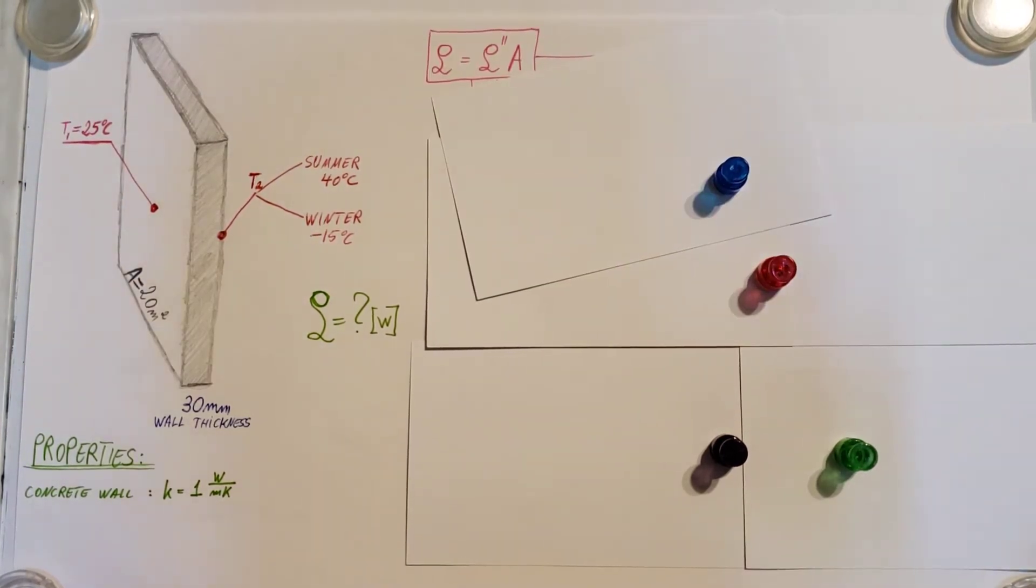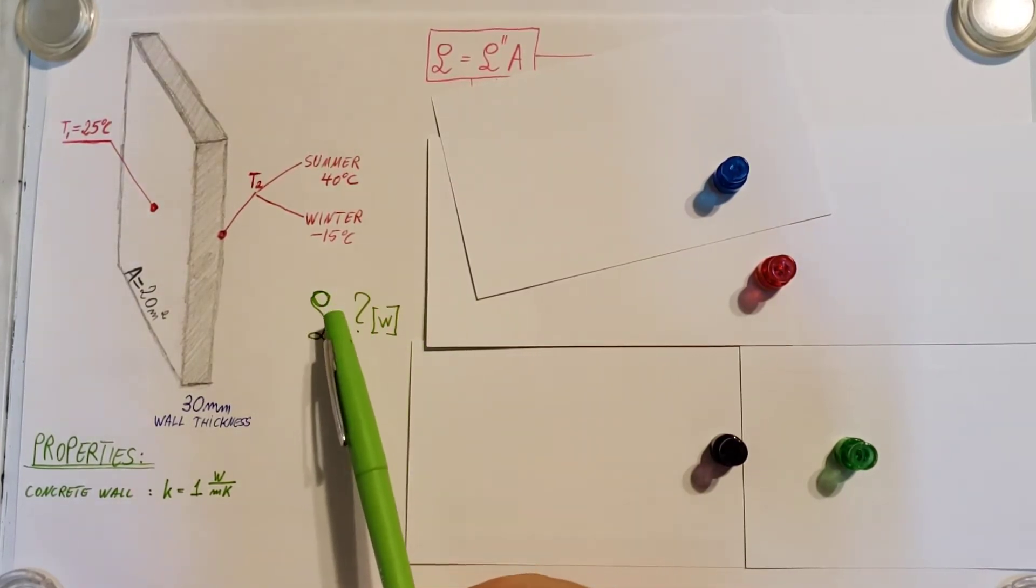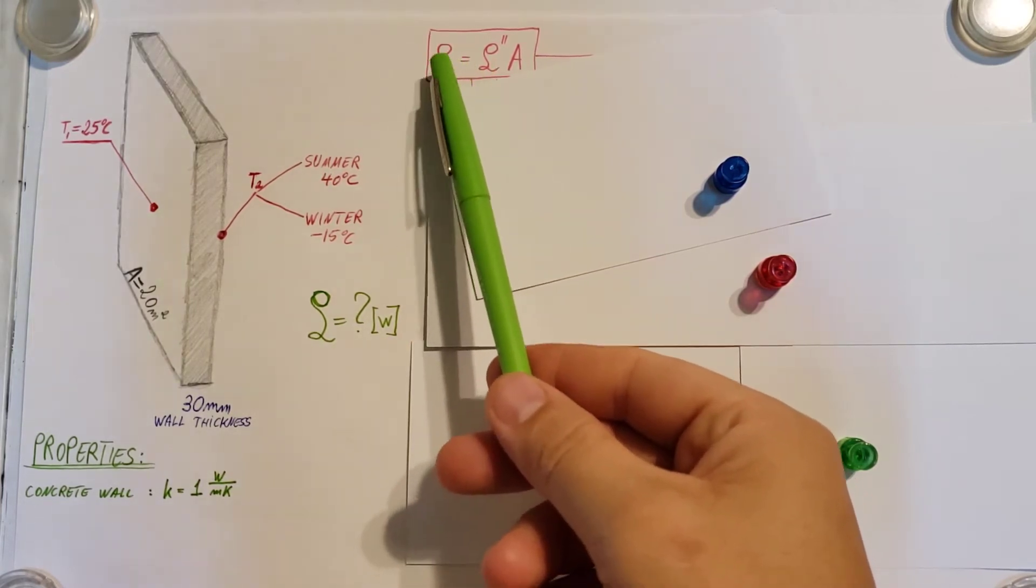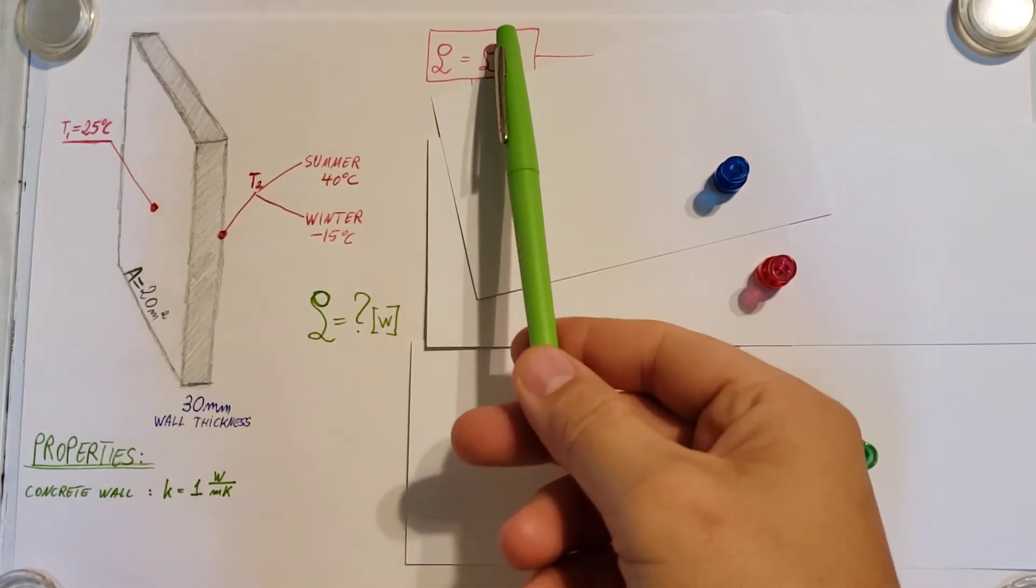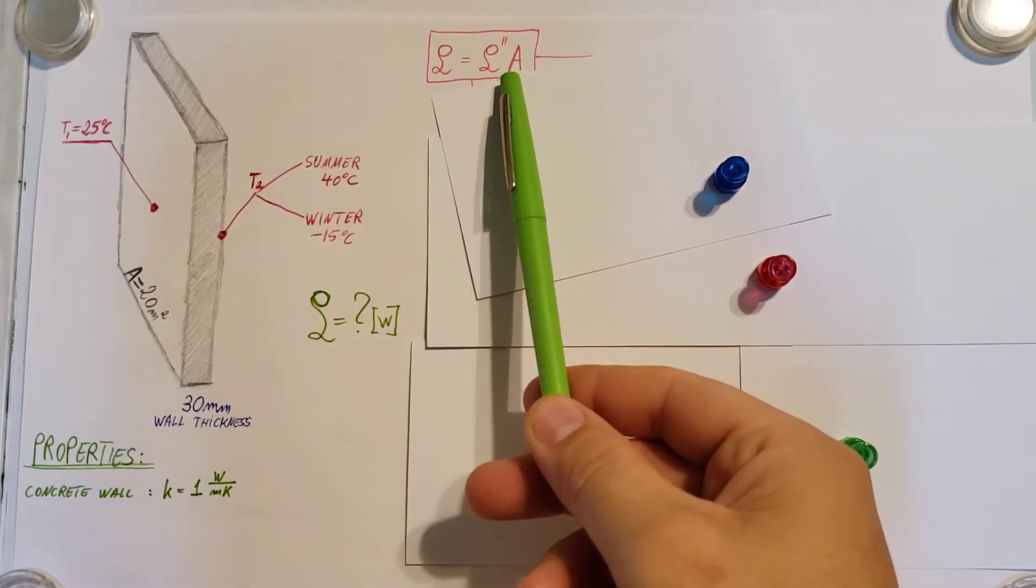Now to start up, we know that the heat loss that we need to find has a unit of watts. So let's write up the formula for it, which we know is Q equals Q double prime, which is our flux times area.